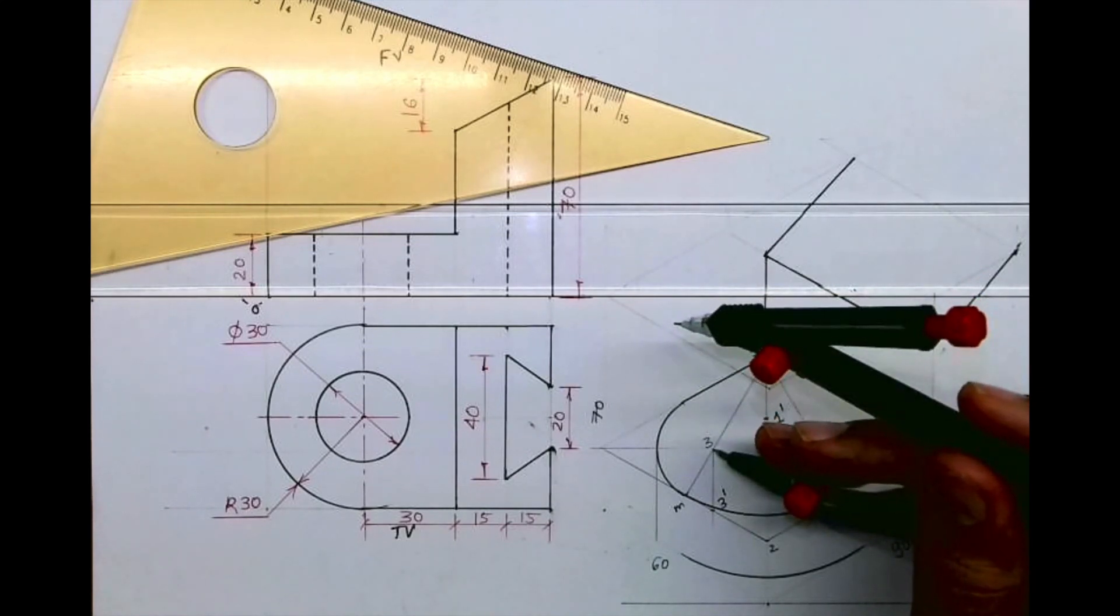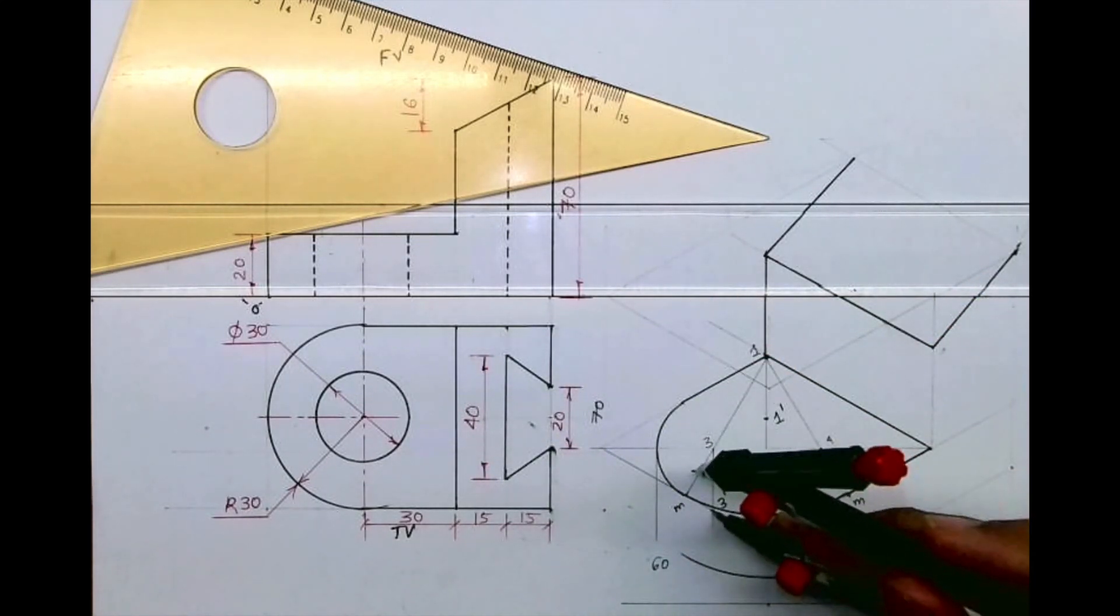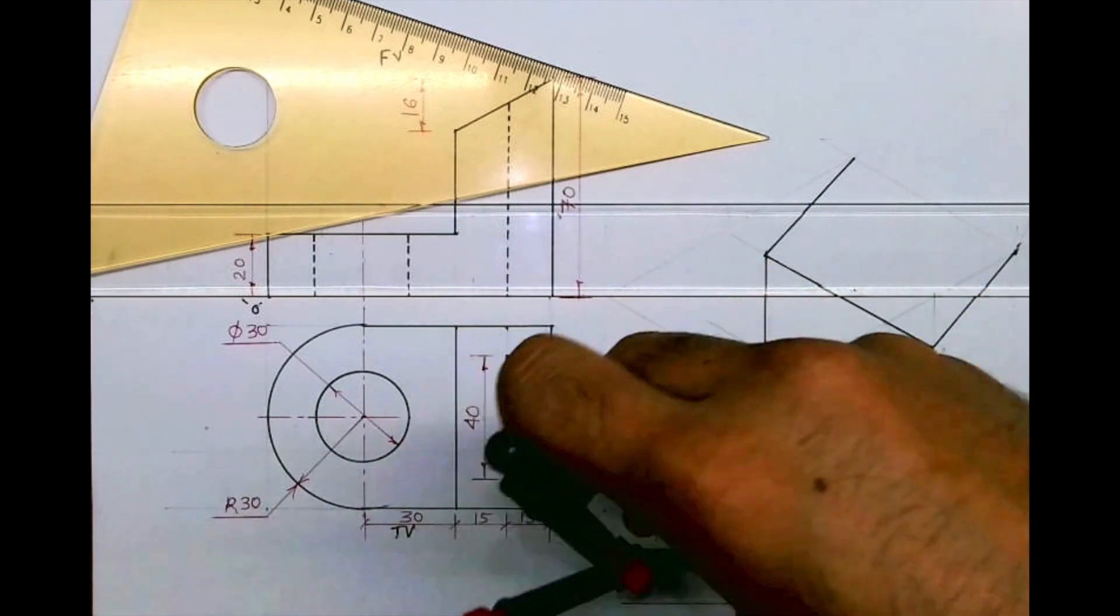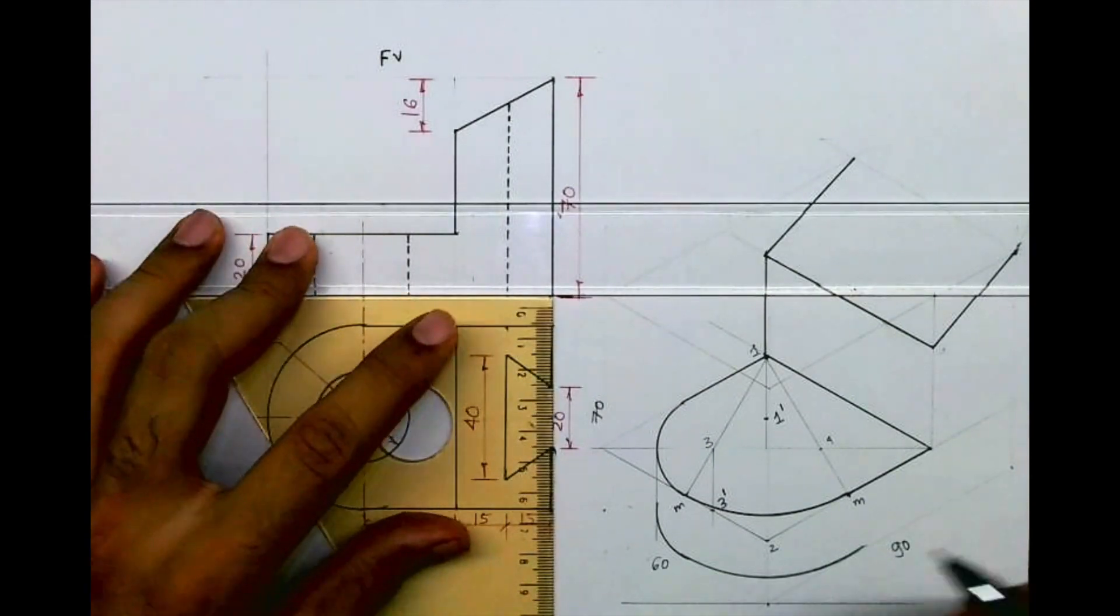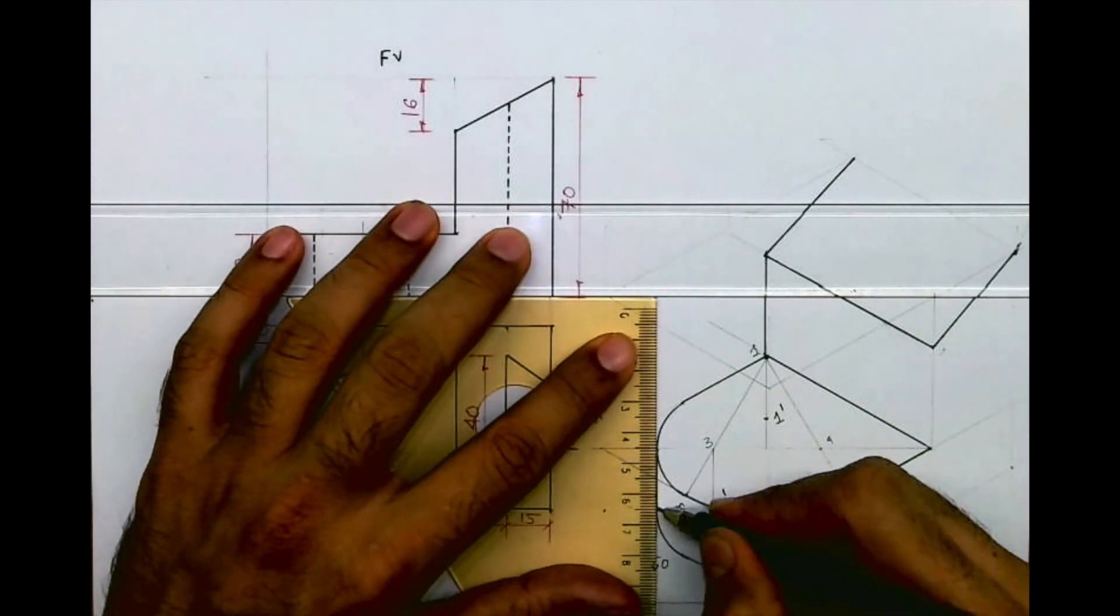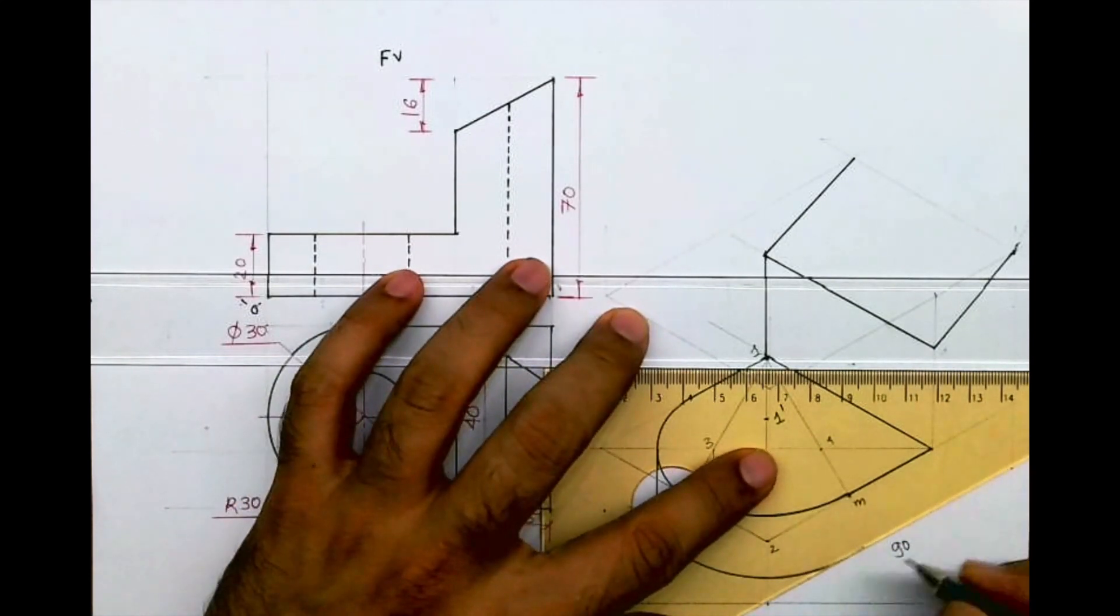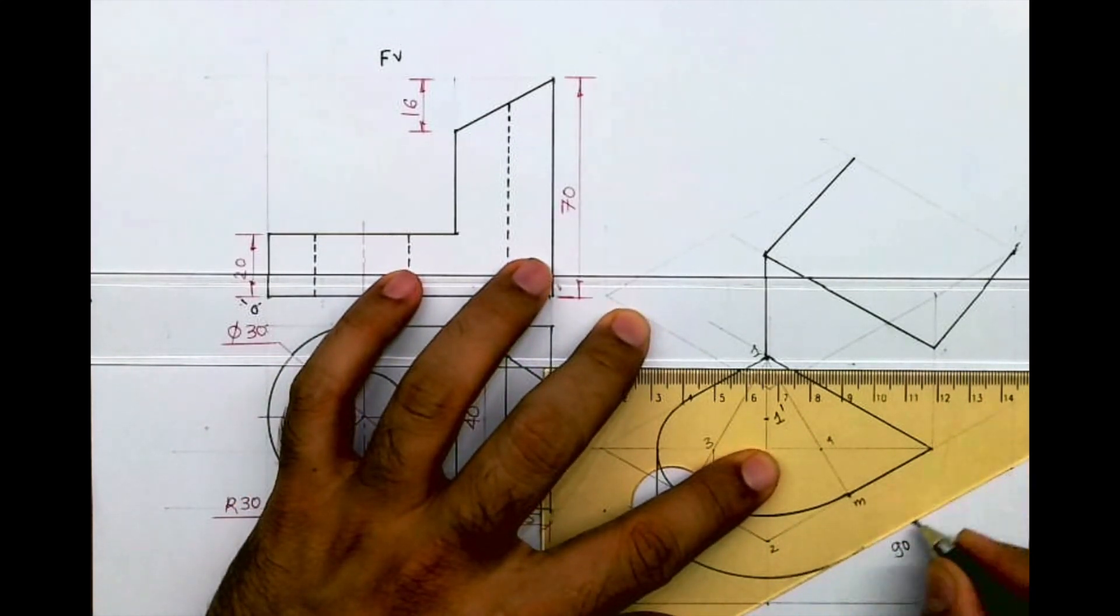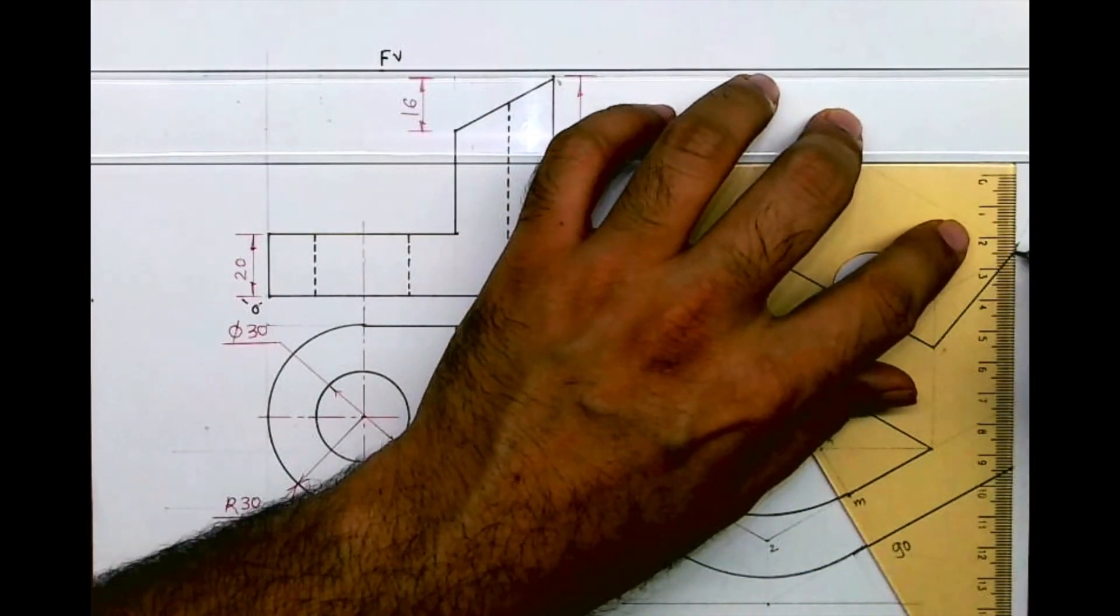Same way 3 to m, we'll take that radius, we'll go down by 20, 3 dash, and from there we'll draw radius. We'll draw tangent and we'll draw this line dark as well as these two lines.